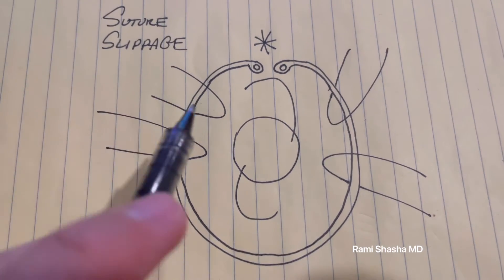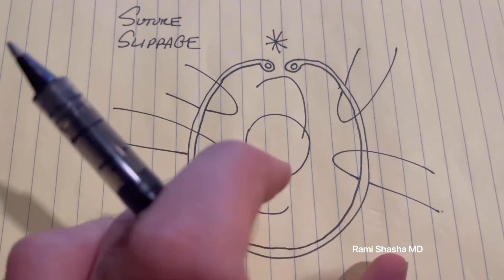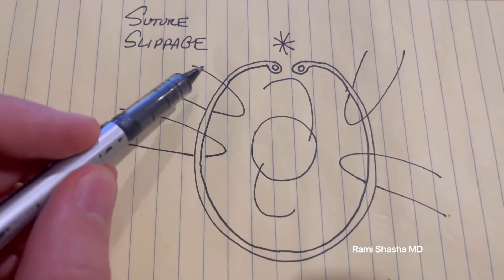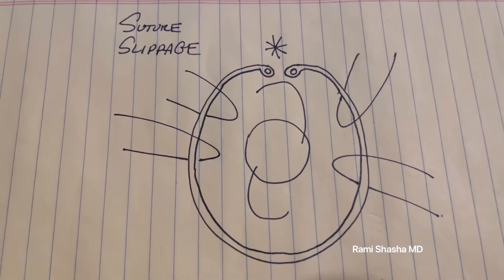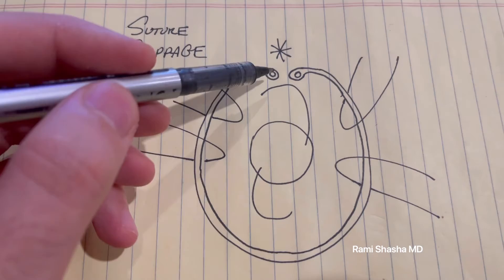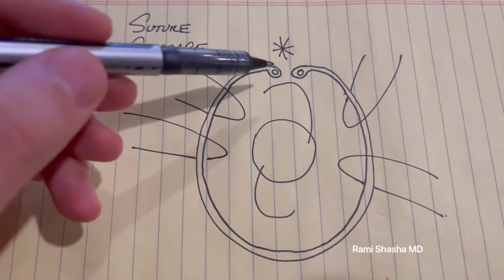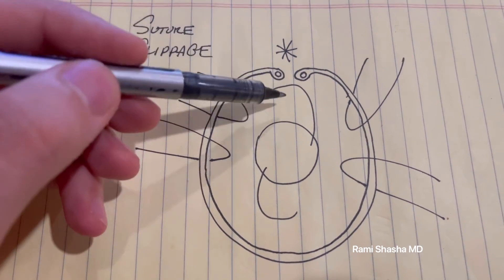If, for example, the complex is dislocated this way and you want to reposition it this way, you really have no issues throwing a suture loop here, here, here, here. But don't pass the suture loop where you expect the gap to be because it may ultimately pass through.